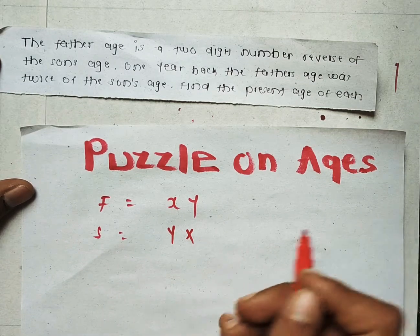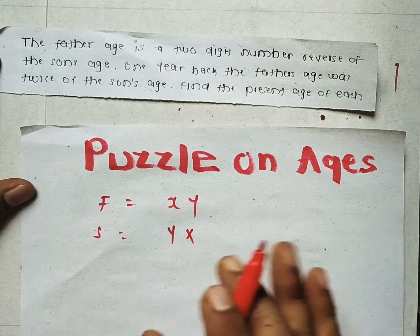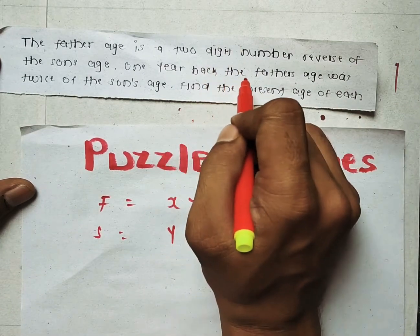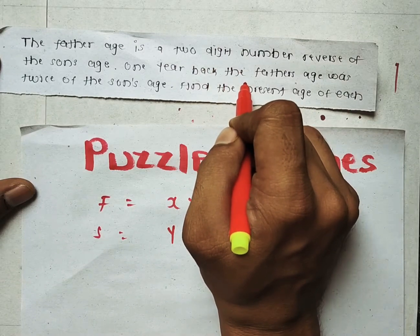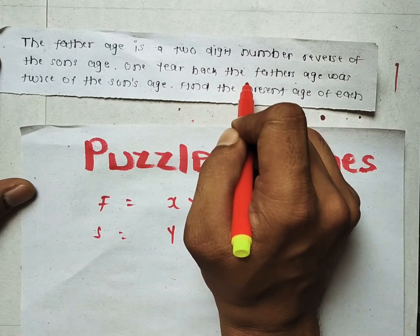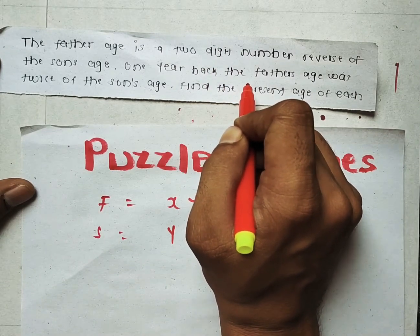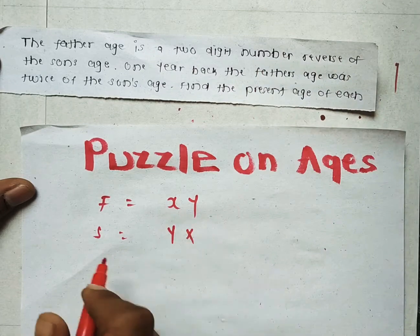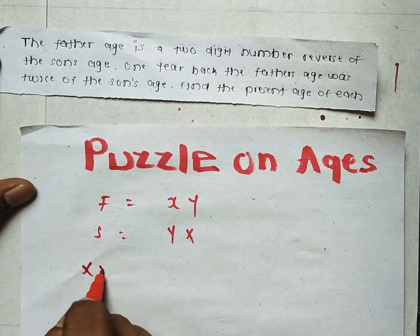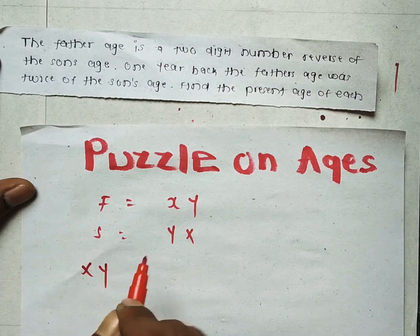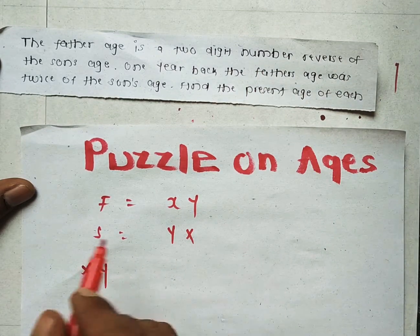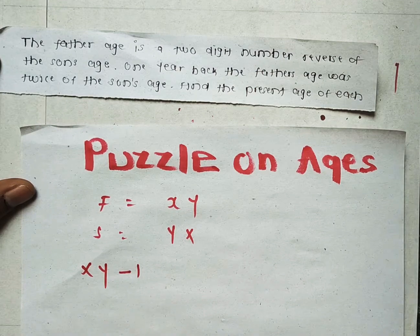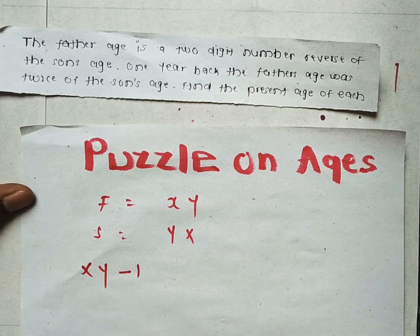One year back means we have to subtract one. The father's age right now is XY, so one year back he will be XY minus one. This is a two-digit number.